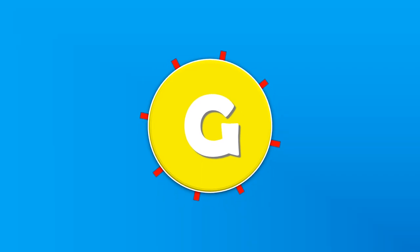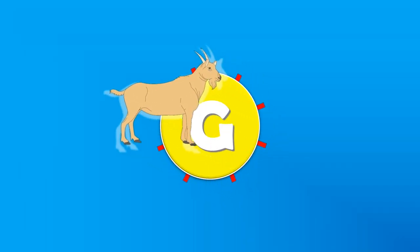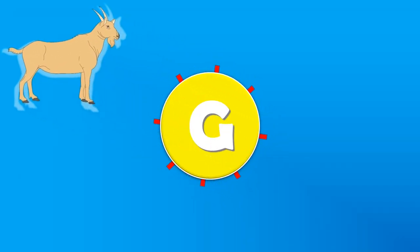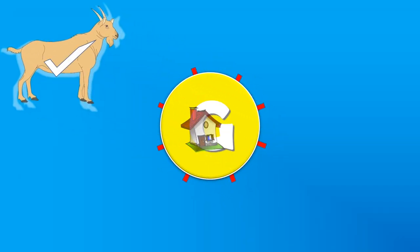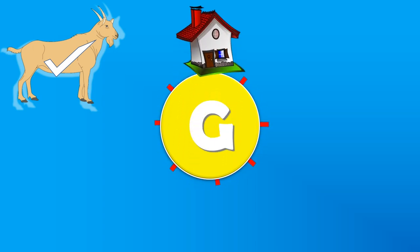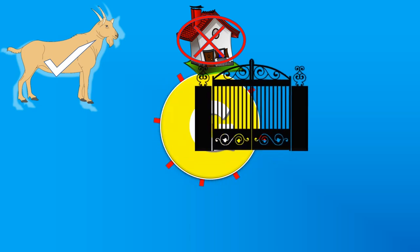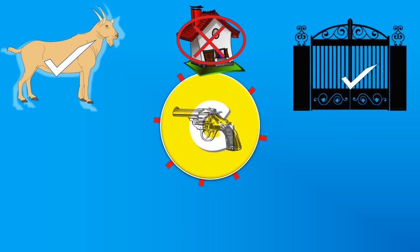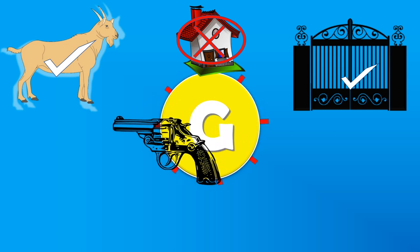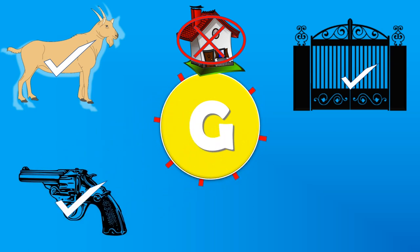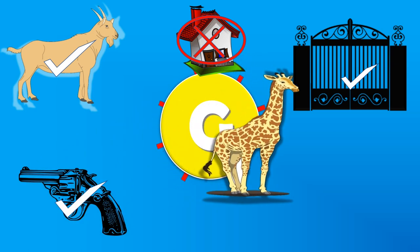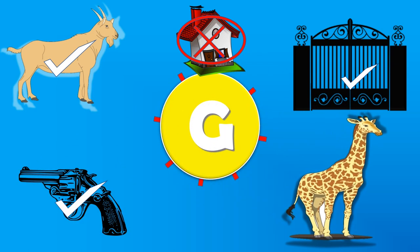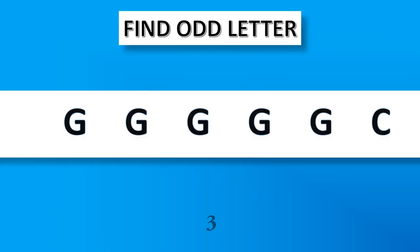G. G for goat, correct, yes. G for home — no, it's wrong. G for gate, correct, yes. G for gun, correct, yes. G for giraffe, correct, yes. Find odd letter.